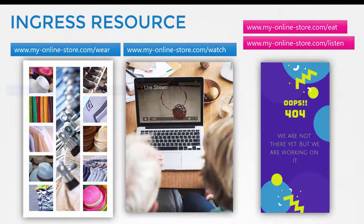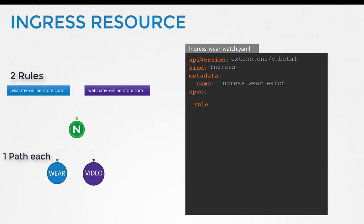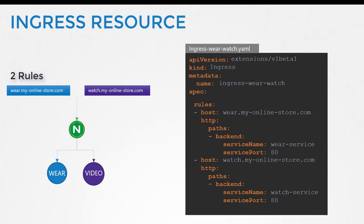The third type of configuration is using domain names or hostnames. We create two rules, one for each domain. To split traffic by domain name, we use the host field. The host field in each rule matches the specified value with the domain name used in the request URL and routes traffic to the appropriate backend. Note that we only have a single backend path for each rule, which is fine — all traffic from these domain names will be routed to the appropriate backend irrespective of the URL path used. Comparing the two approaches: splitting traffic by URL used one rule with two paths; splitting traffic by hostname used two rules with one path specification each.